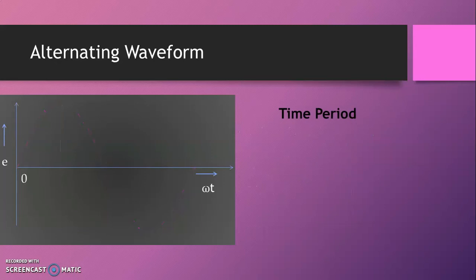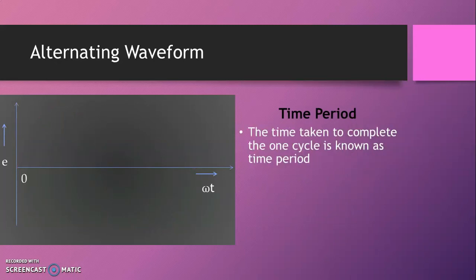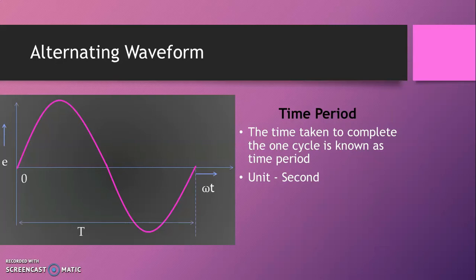Time period: the time taken to complete one cycle is known as the time period. The unit of time period is second. The time taken to complete the entire cycle is indicated by the time period T.